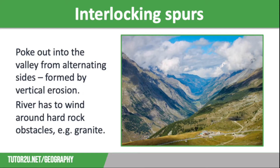Erosional processes in the upper course of the river lead to the formation of V-shaped valleys, interlocking spurs, waterfalls, rapids and gorges.